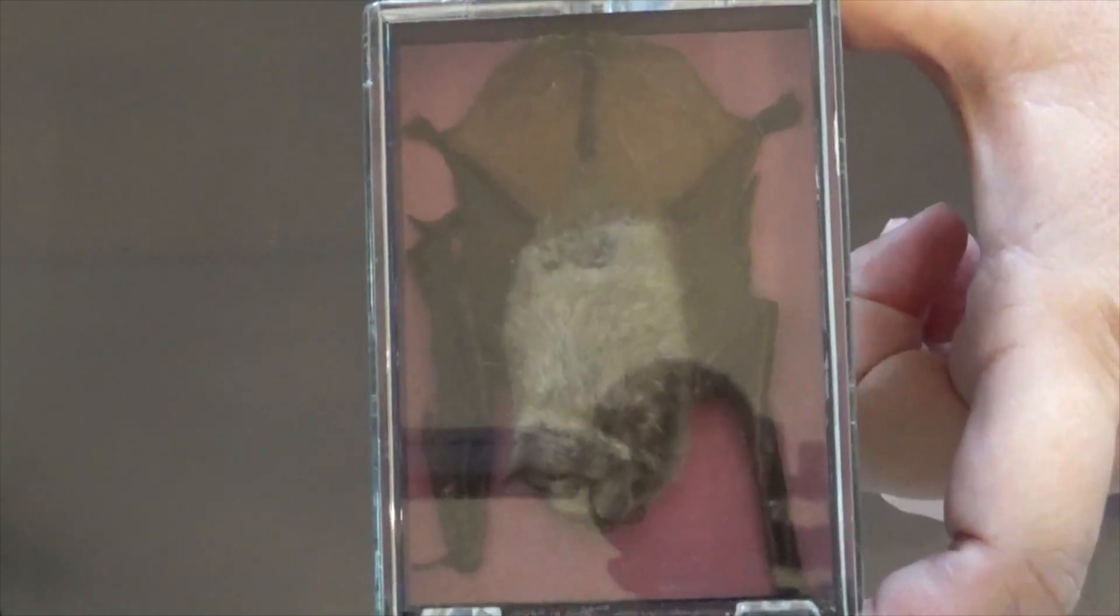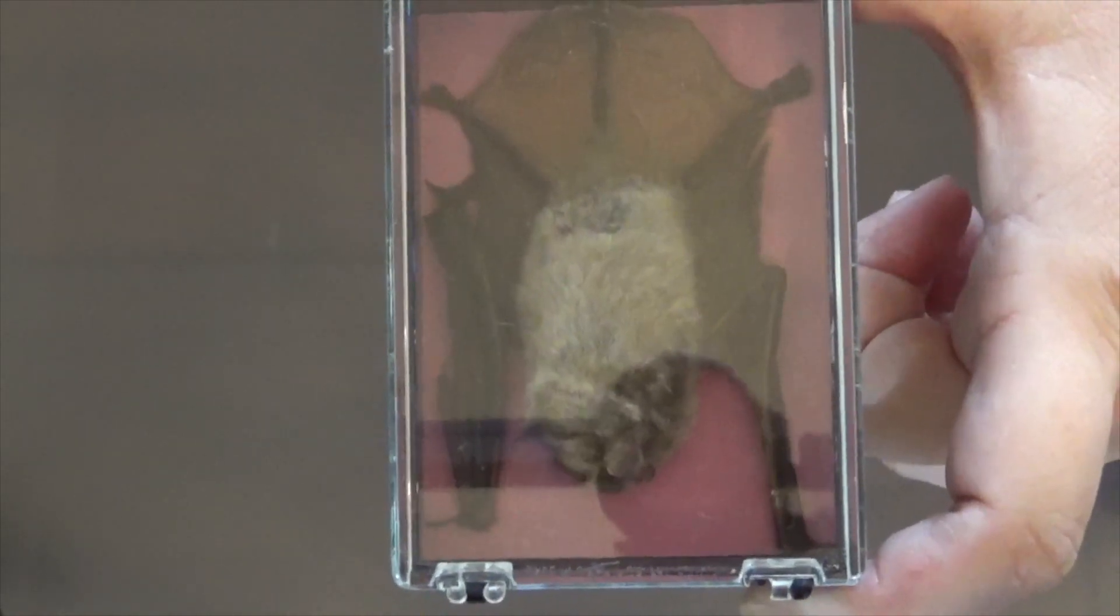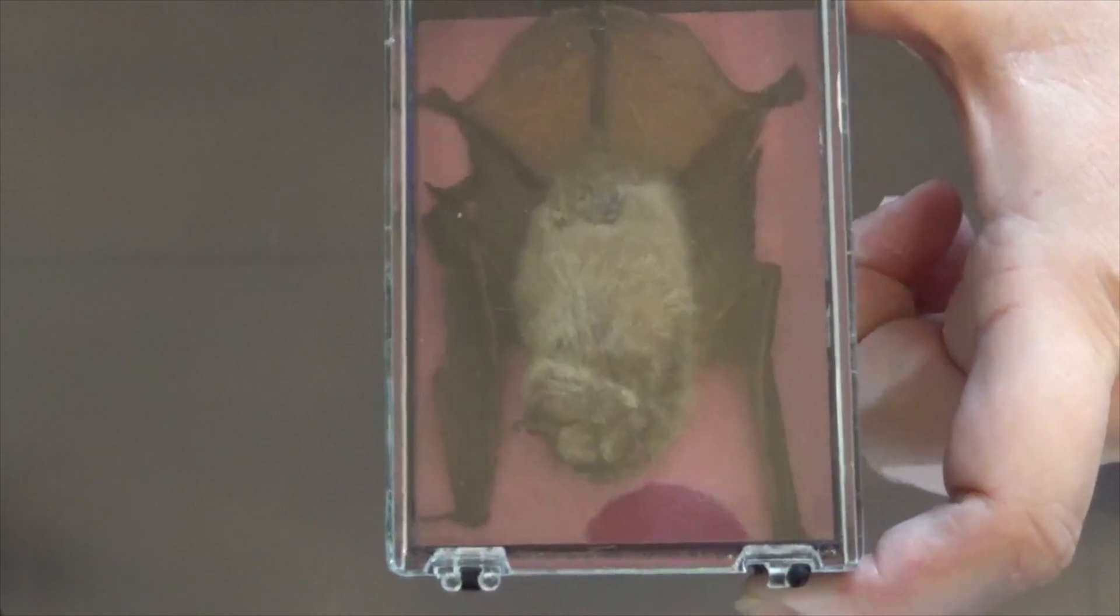So he uses something called echolocation, which if you can imagine is his way of seeing. His body sends out sound waves and they're able to bounce off of things around him and make a picture or a map in his head.